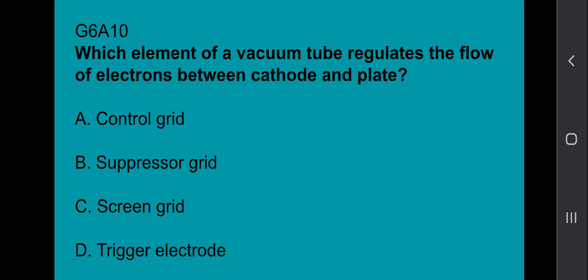G6A10: Which element of a vacuum tube regulates the flow of electrons between cathode and the plate? That's the control grid.